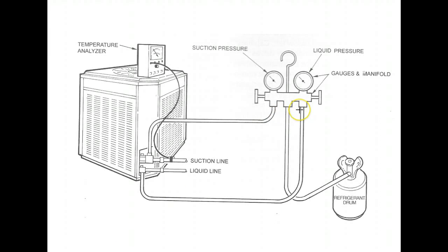You're going to do the same thing when you hook up your high side. This needs to be a little bit loose. And as soon as you start to get refrigerant purging out of the fitting there, you know that the line has been purged and you're going to tighten that back up.